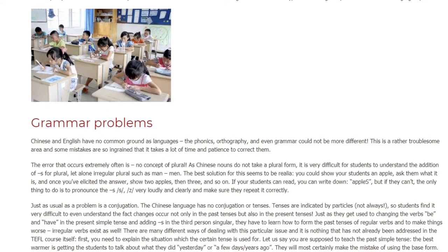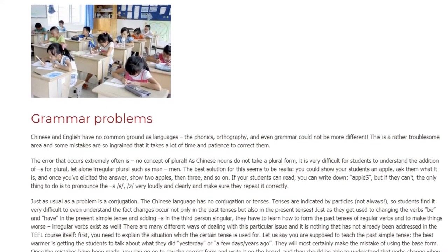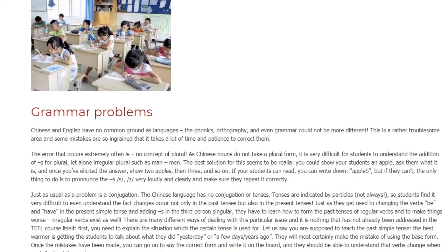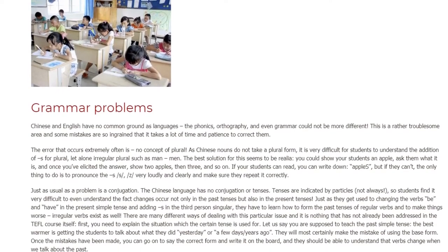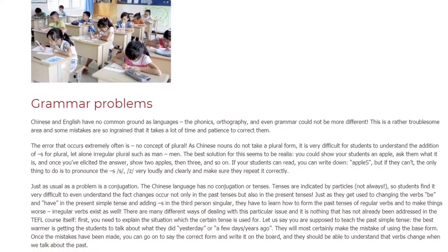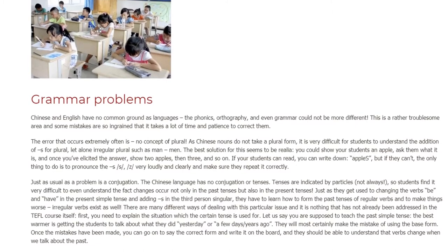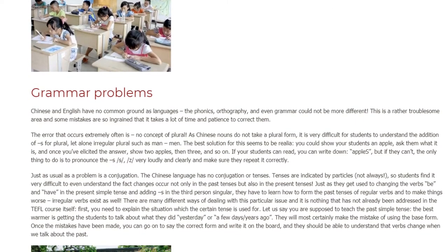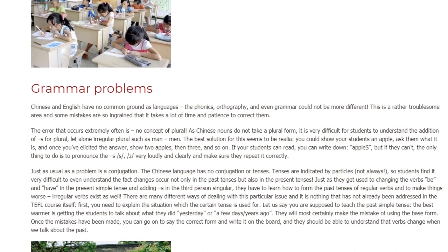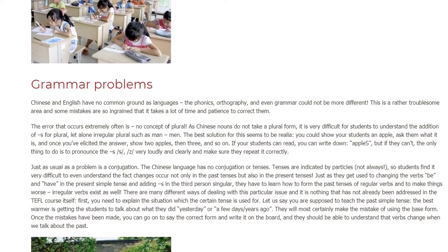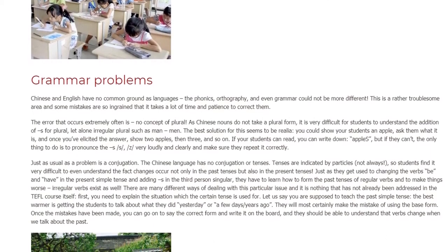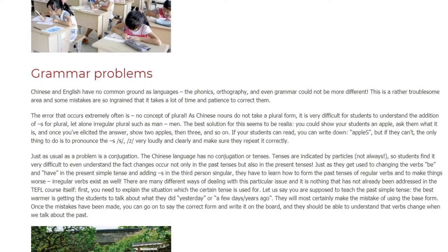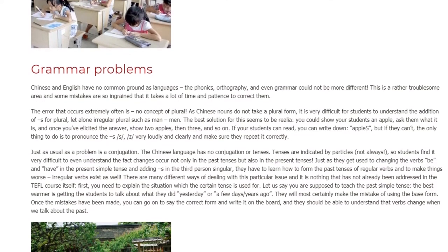The best solution for teaching plurals seems to be real objects. You could show your students an apple, ask them what it is, and once you've elicited the answer, show two apples, then three, and so on. If your students can read, you can write down 'apples,' but if they can't, the only thing to do is to pronounce the 's' or 'z' very loudly and clearly and make sure they repeat it correctly. Just as common a problem is conjugation.